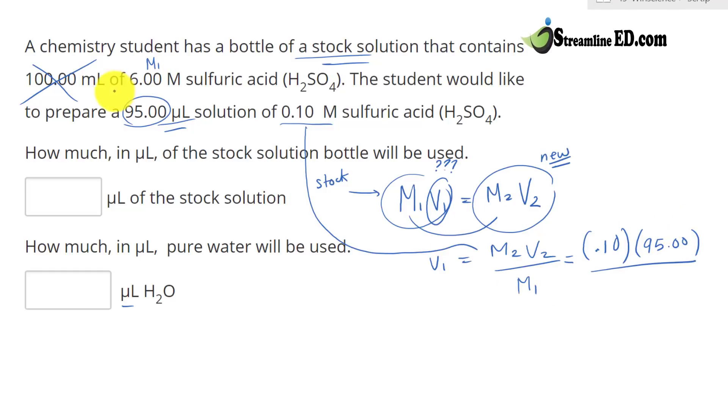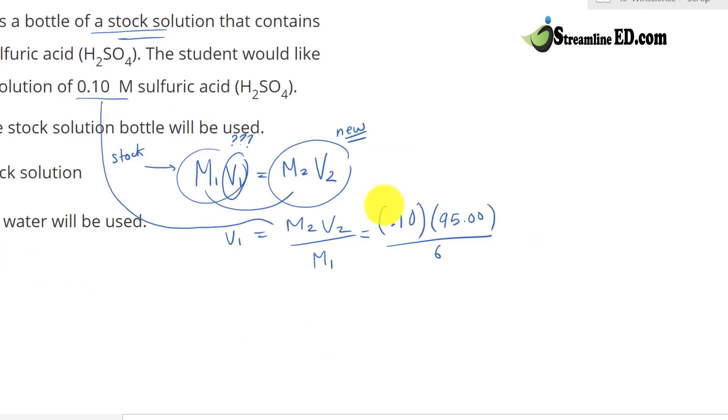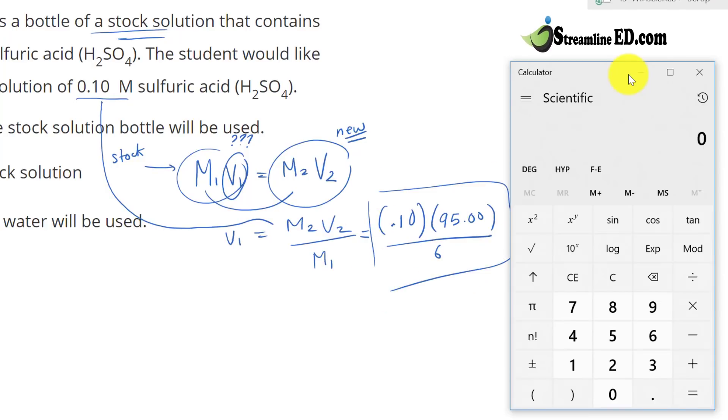What about our M1? M1 is just right there. So 6. So that's pretty straightforward. All you have to do is now use a calculator and solve that problem. Now you just multiply and divide. 0.1 times 95 divided by 6.